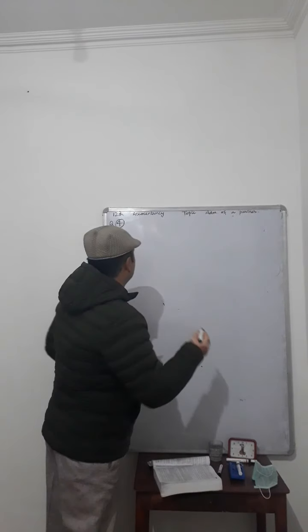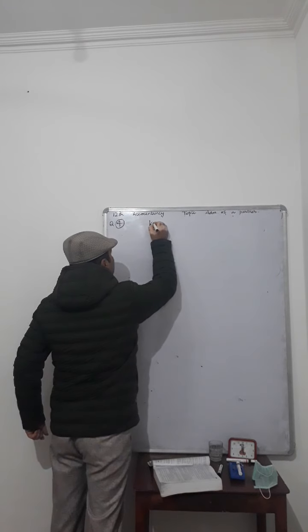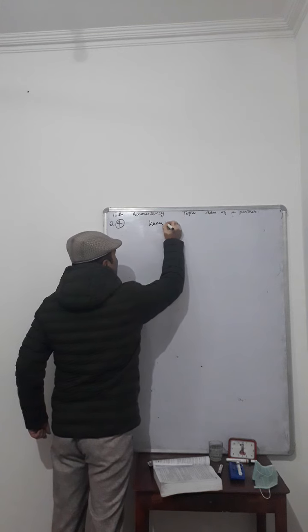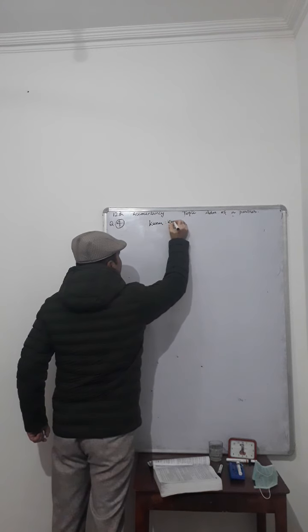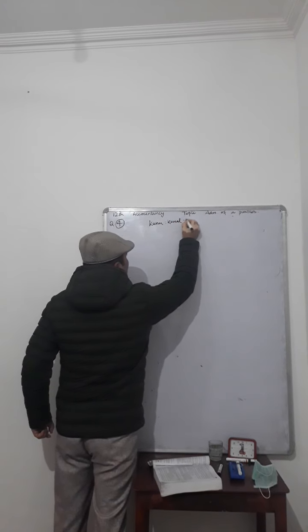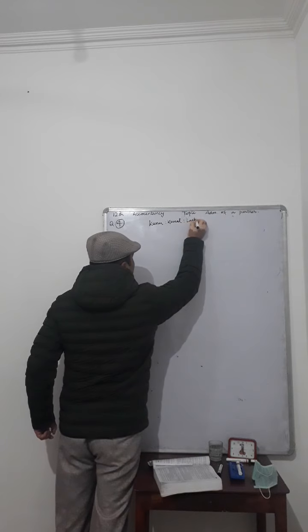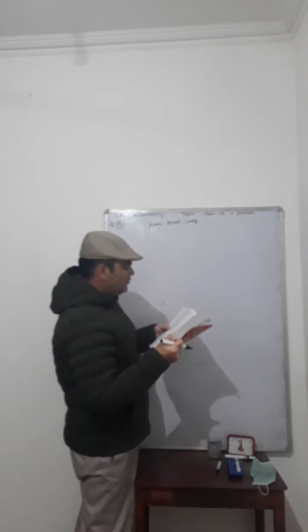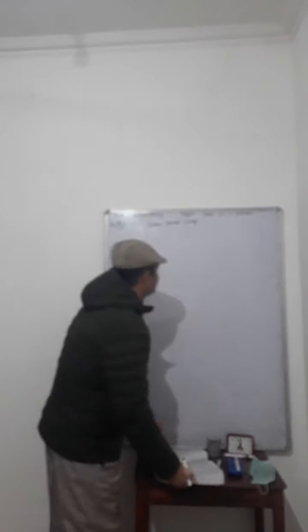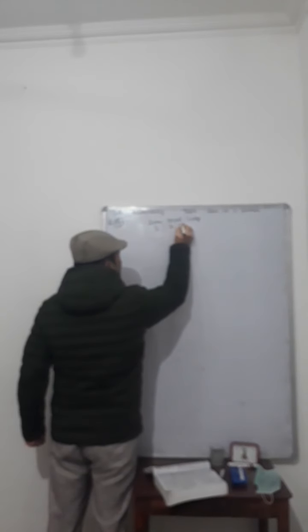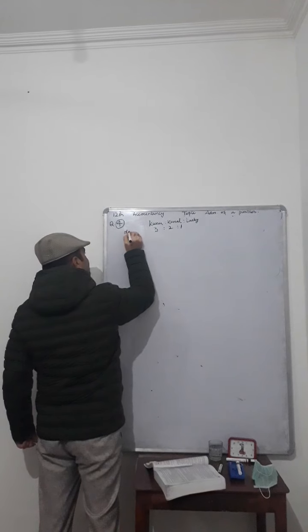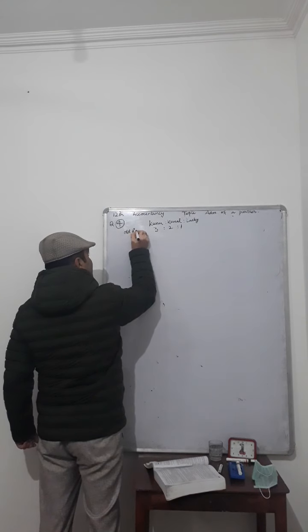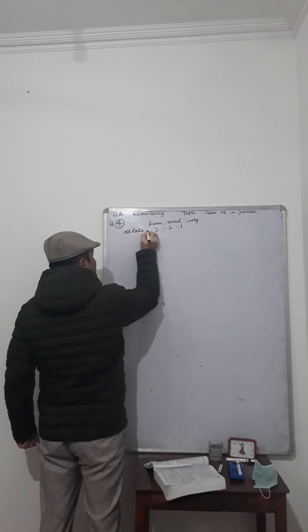We have Kunu, Kunal and Lucky. These are 3 partners sharing their profits and losses in the ratio 3 to 2 to 1. That is our old ratio is equal to 3 is to 2 is to 1.